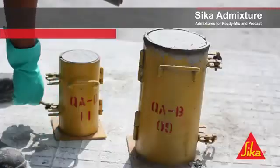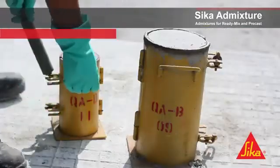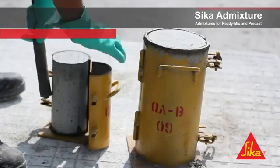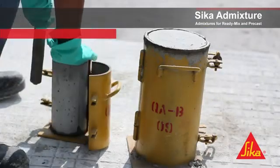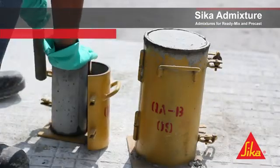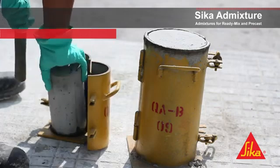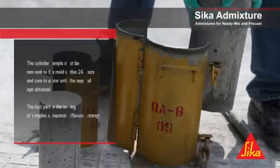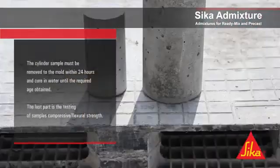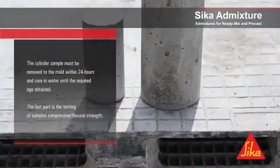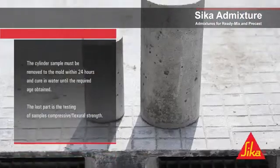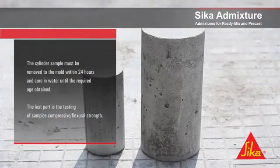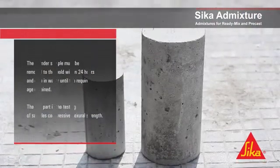The cylinder sample must be removed from the mold within 24 hours and cured in water until the required age is obtained. The last part is the testing of samples: compressive and flexural strength.